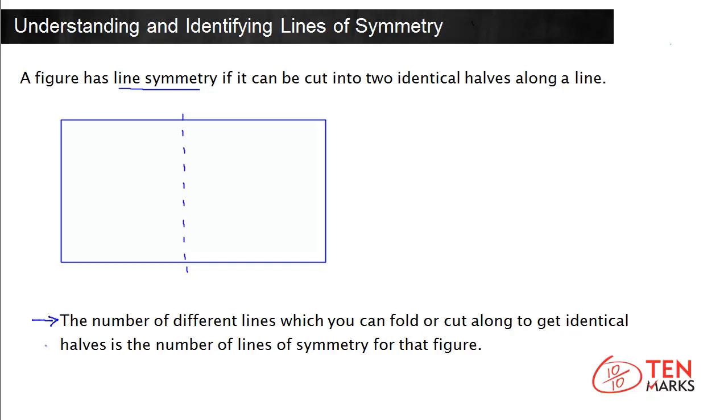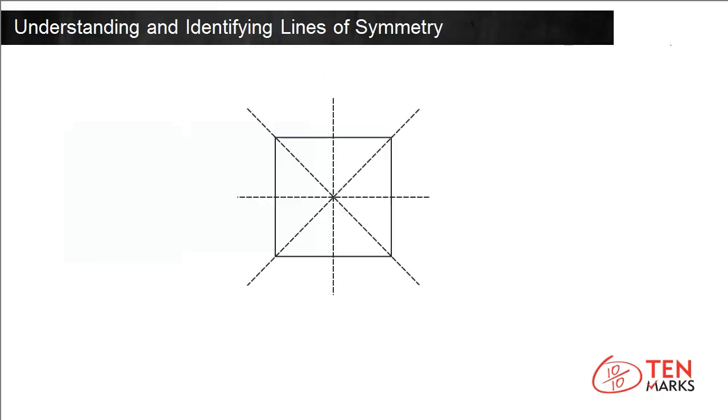Look at a few examples. Here is a square. You can fold over the dotted lines and you will get matching halves of the figure. A square can be folded vertically and horizontally into two halves that are exactly the same.